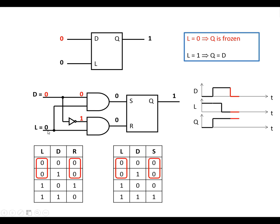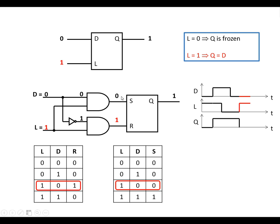Now we're going to make the latch go high again. Going into this AND gate, if the latch is high and D is low, we've now got a 1 and a 1 going in, which gives us a 1 at the reset input. And we've got a 1 and a 0, giving us a 0 at the set input. So the bistable is now in the reset state, which means Q is going to go low. So when the latch is high again, Q is going to be exactly what D is.